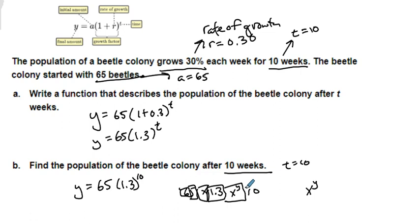And then you would put in 10 for your y. So let's go 65 times, I got 1.3, I'm going to hit my x to y button, and then I'm going to put 10 in for that. So that gives me 896.08 beetles.